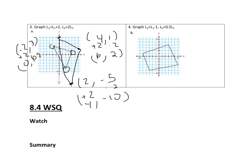Go ahead and pause the video and try number 4. For this one, my x values use L3 and L1, so I'm going to take the x values and subtract 1. And then I'm going to take half of L2, so this is going to shrink it. Looking at the point at negative 5, 1: subtracting 1 from x gives me negative 6, and multiplying by one half gives me 0.5. So I put this point at negative 6, 0.5.